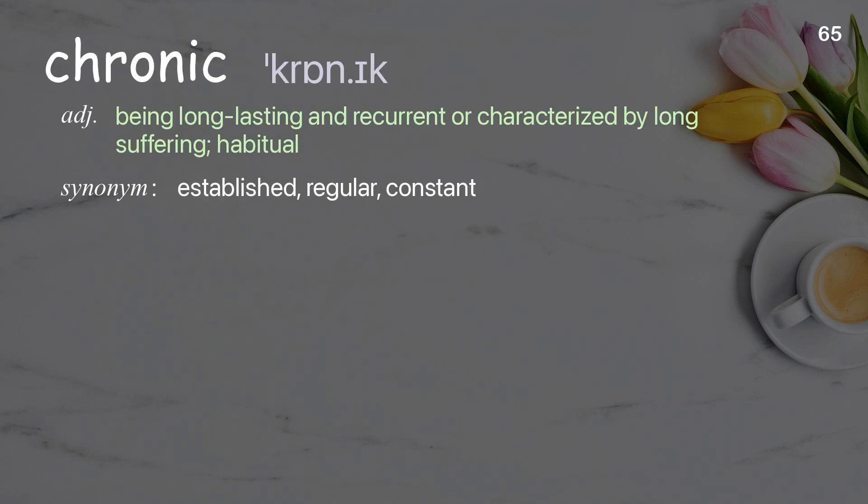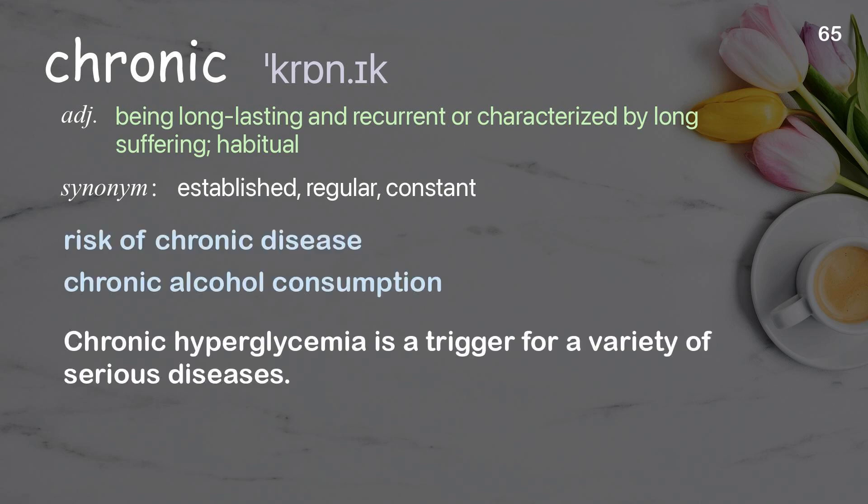Chronic: being long-lasting and recurrent, or characterized by long-suffering; habitual. Examples: risk of chronic disease, chronic alcohol consumption. Chronic hyperglycemia is a trigger for a variety of serious diseases.